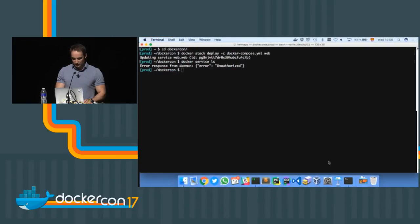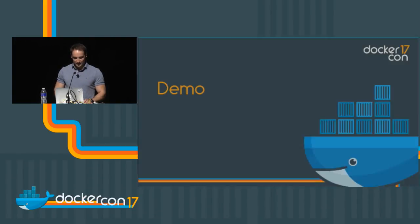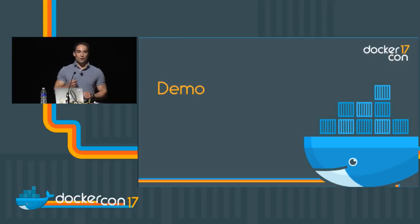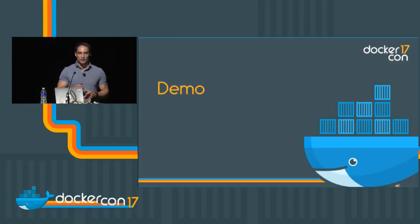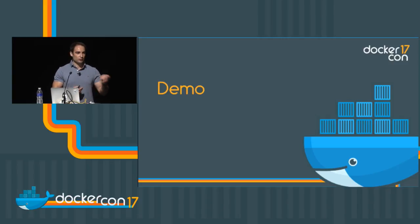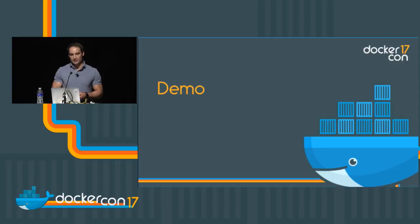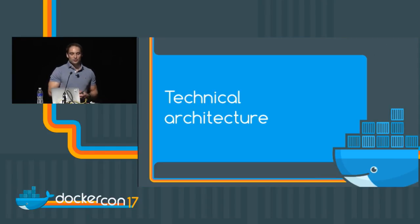So we saw how easy it is with desktop-to-cloud to connect to a remote swarm with just one click, access local files, access local credentials for any registry, connect to swarms of other users, and how easy it is to configure and revoke access to those swarms. Now Marco is going to talk in more detail about the technical architecture of how this works behind the scenes.